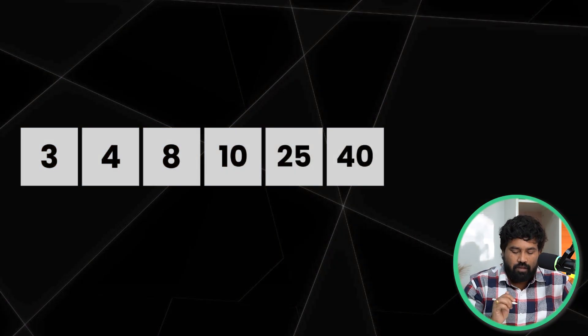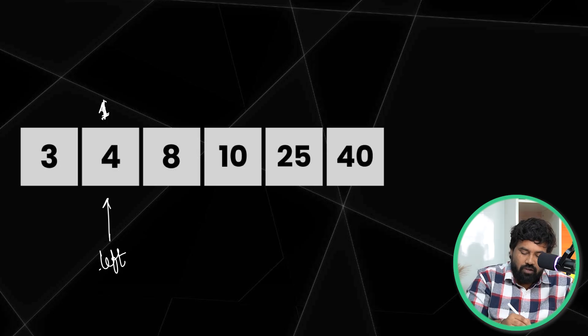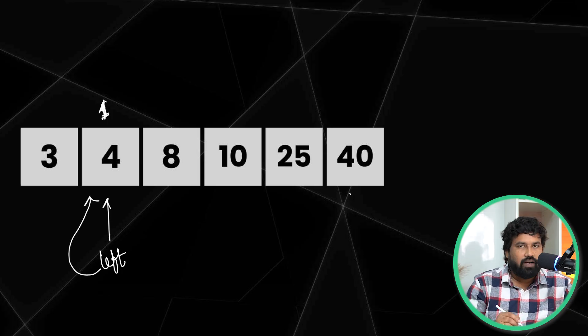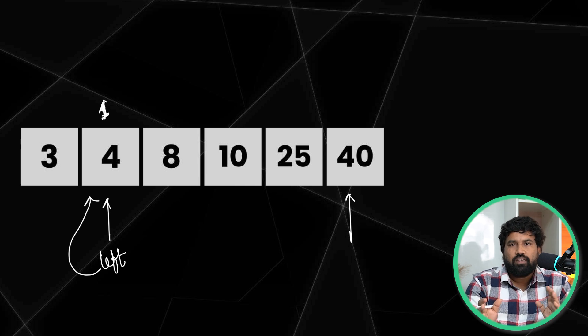First of all, what is the two pointer algorithm? We need to know about the pointer. A pointer is nothing but a variable name which represents the index of an element. For example, here I have a variable called 'left' pointing to index position one, and based on this index we can access the value. If you use two pointers at a time to achieve your goal, it is called the two pointers algorithm.